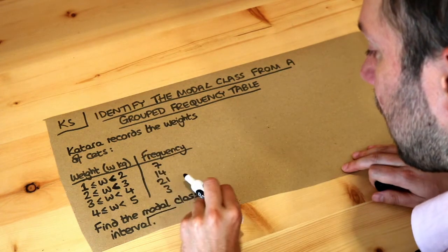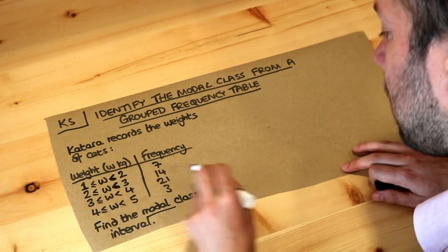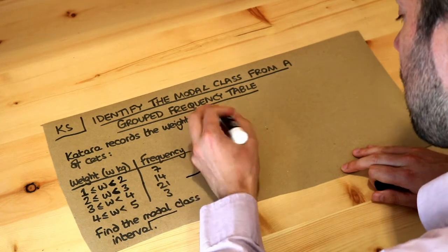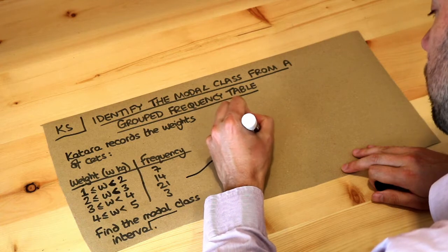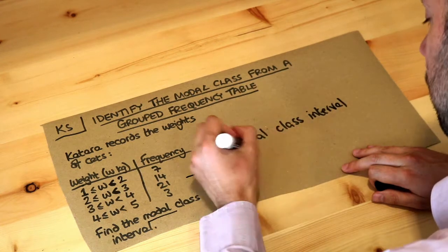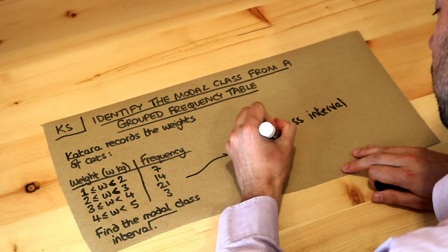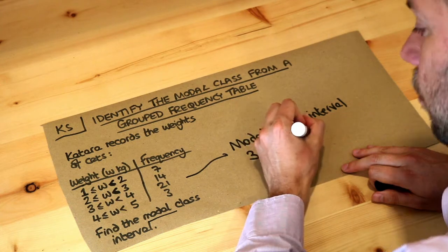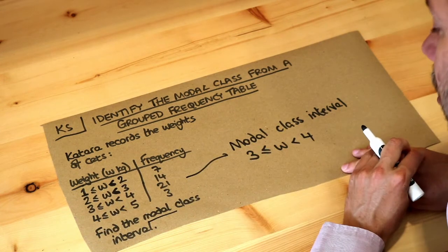So we look down these frequencies, we can see there's most cats in the three to four kilogram interval, and therefore the modal class interval is three to four because that is the class interval, the sort of range, where the most cats lie.